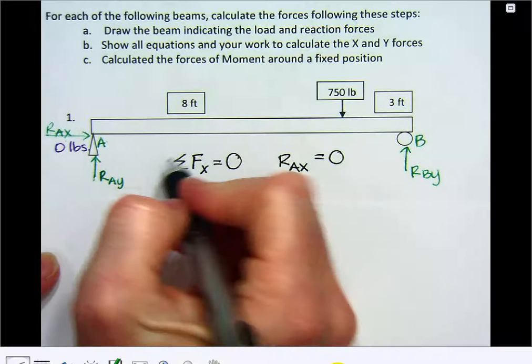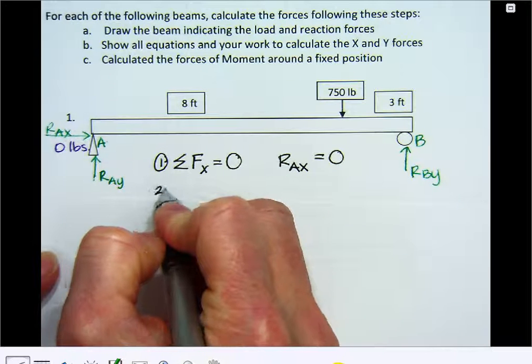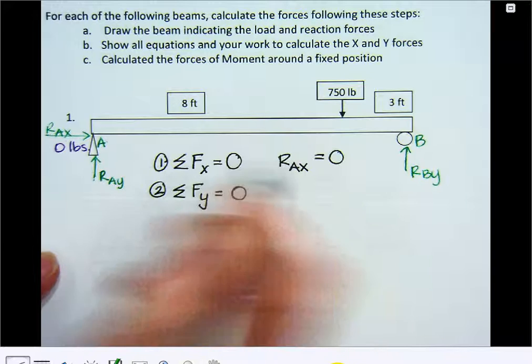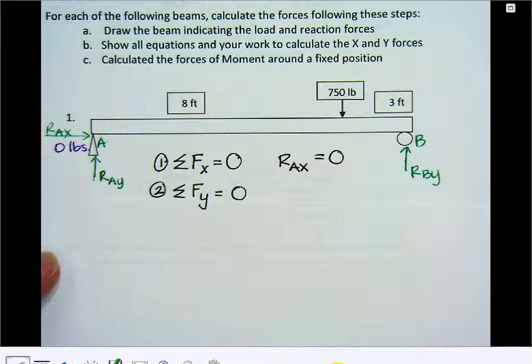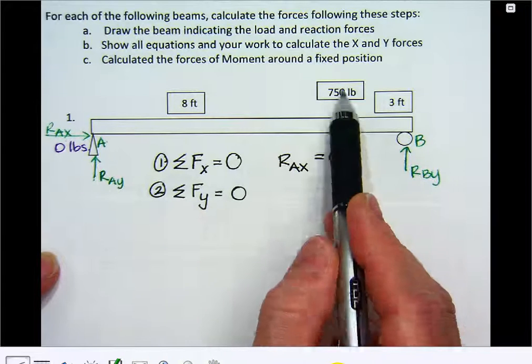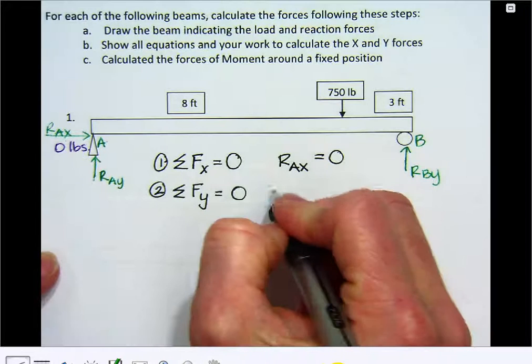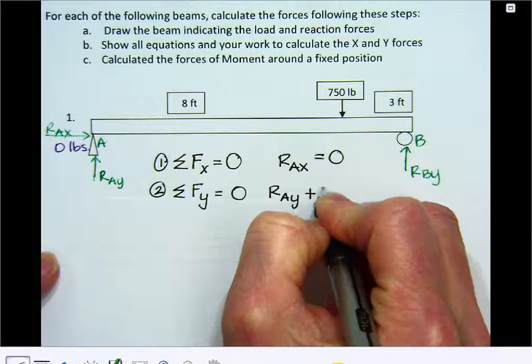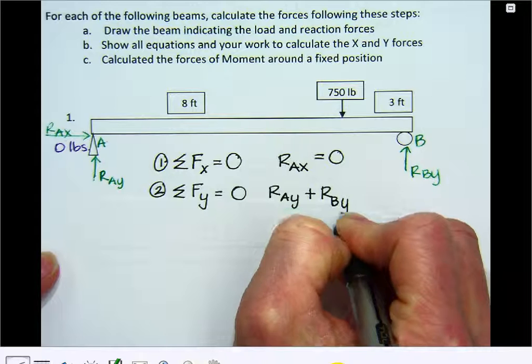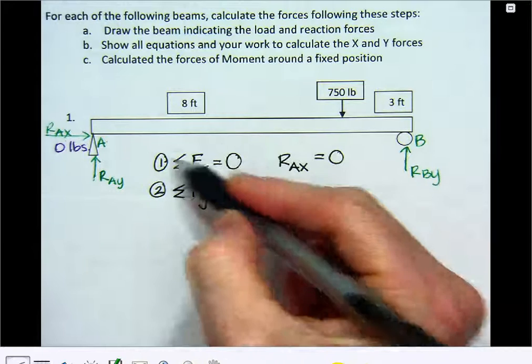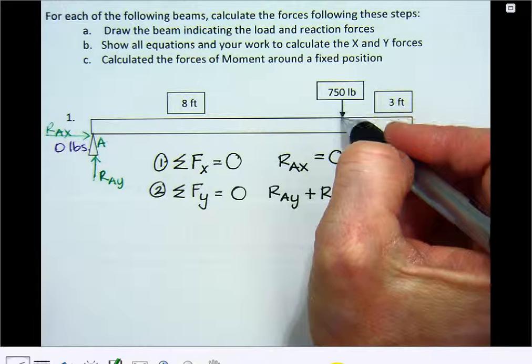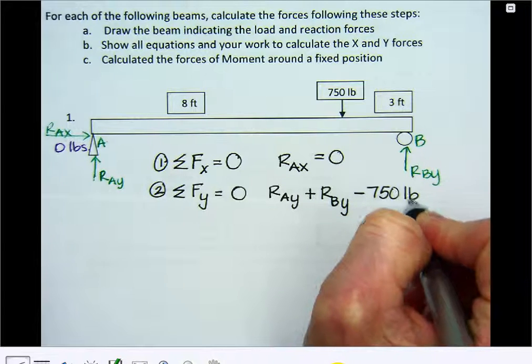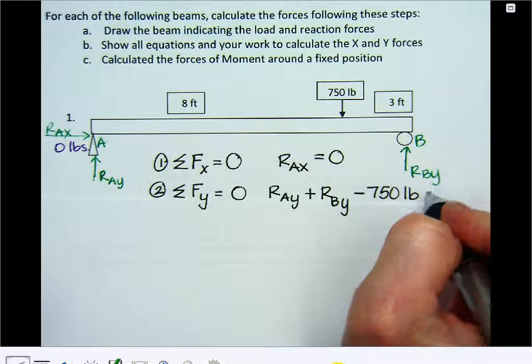So the second step in our three-step process is the sum of the forces in the y direction must be zero. So now I'm going to look at everything that is going up and down, and those have to all add to be zero. So I have reaction force at A in the y direction, plus I have a reaction force at B in the y direction. Those are both going up, so they're both positive. And then I have the 750 pound force acting down, so I'm going to put negative 750 pounds. That's everything up or down has to equal zero.